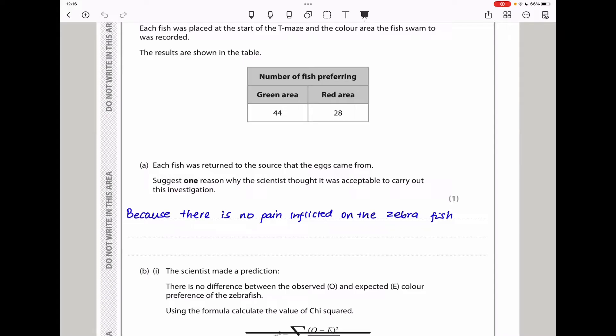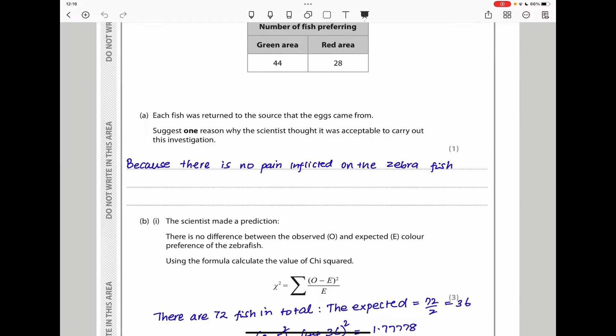Suggest one reason why the scientists thought it was acceptable to carry out this investigation. The investigation was carried out because there is no pain inflicted on the zebrafish, so it was acceptable and there was no ethical concern.